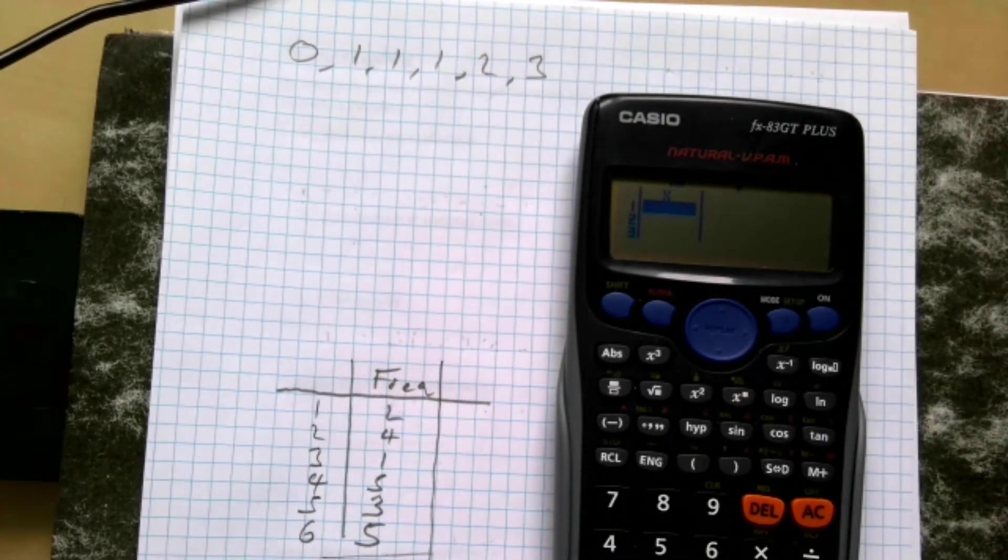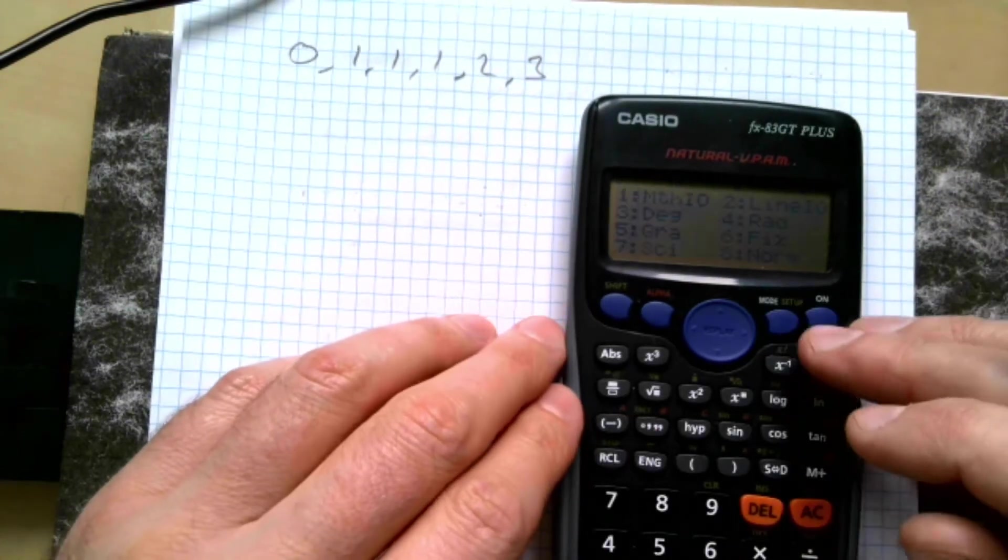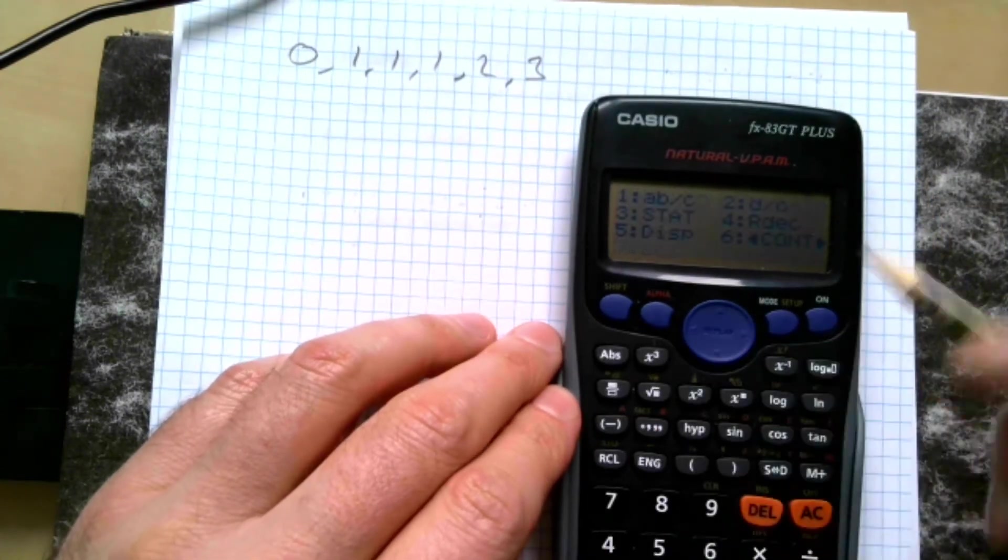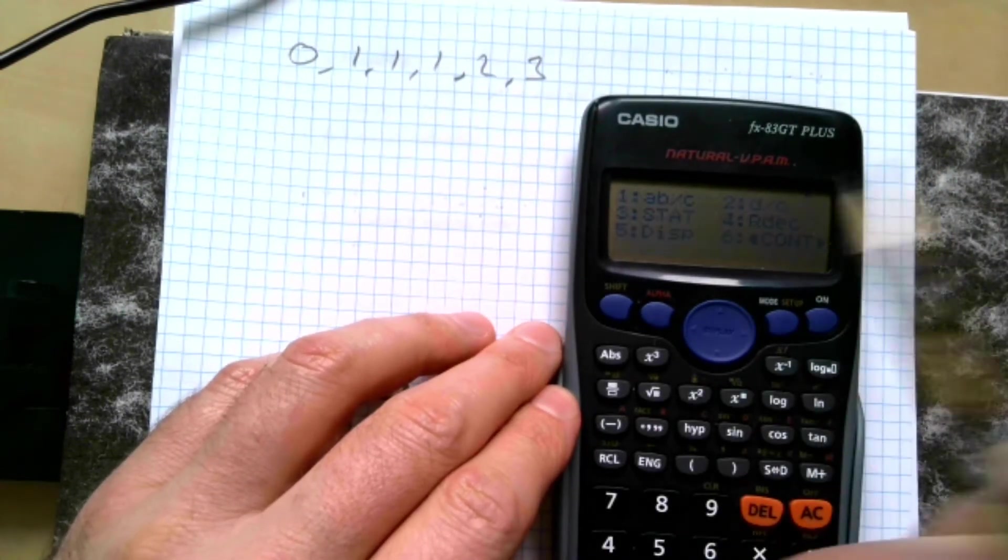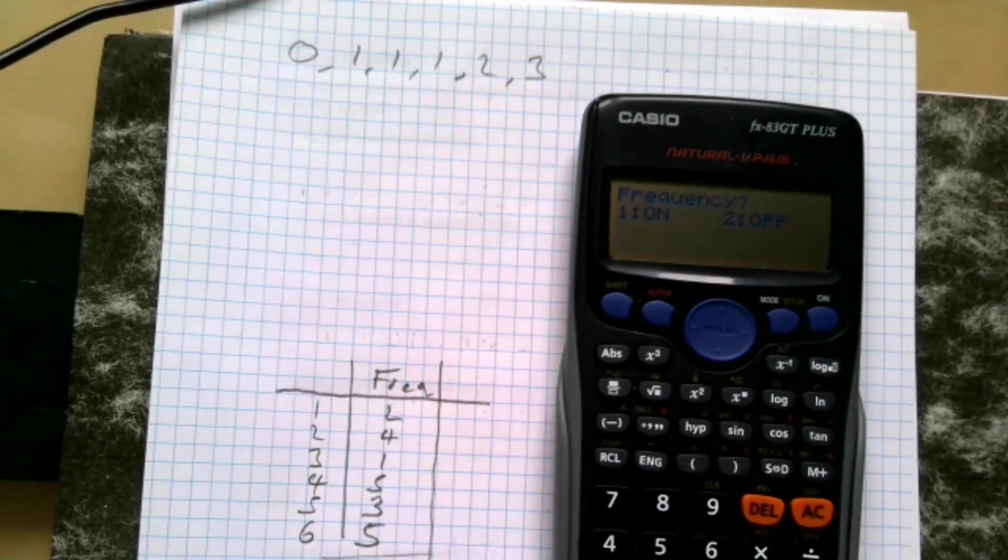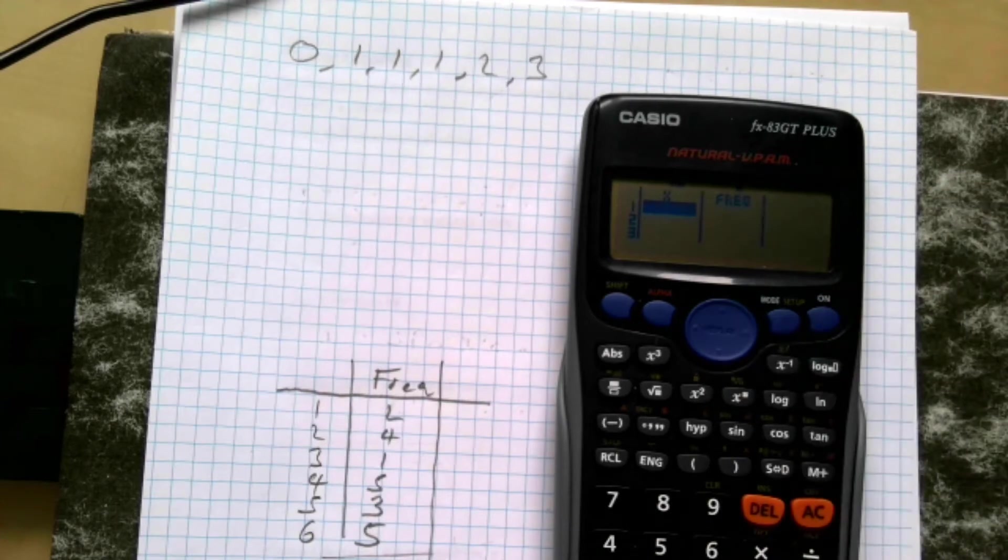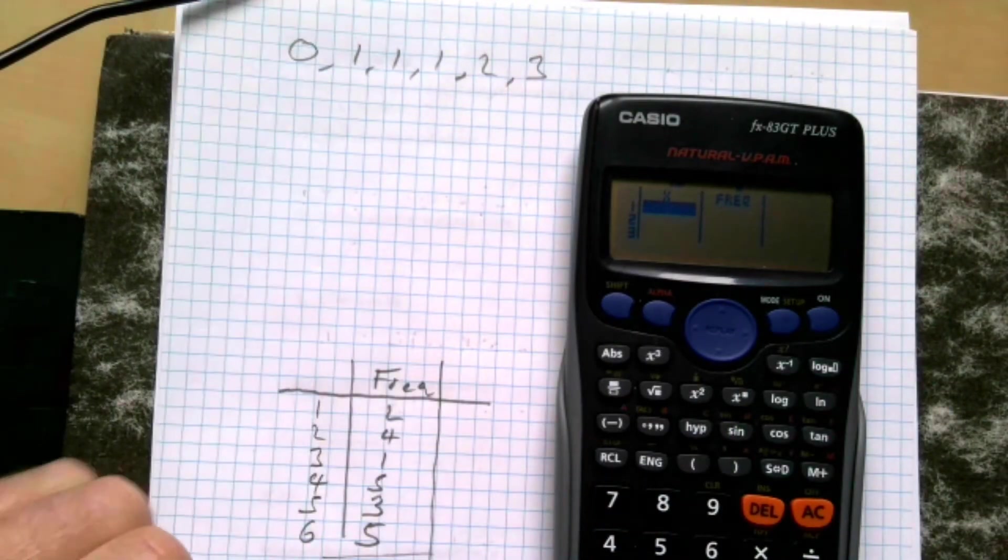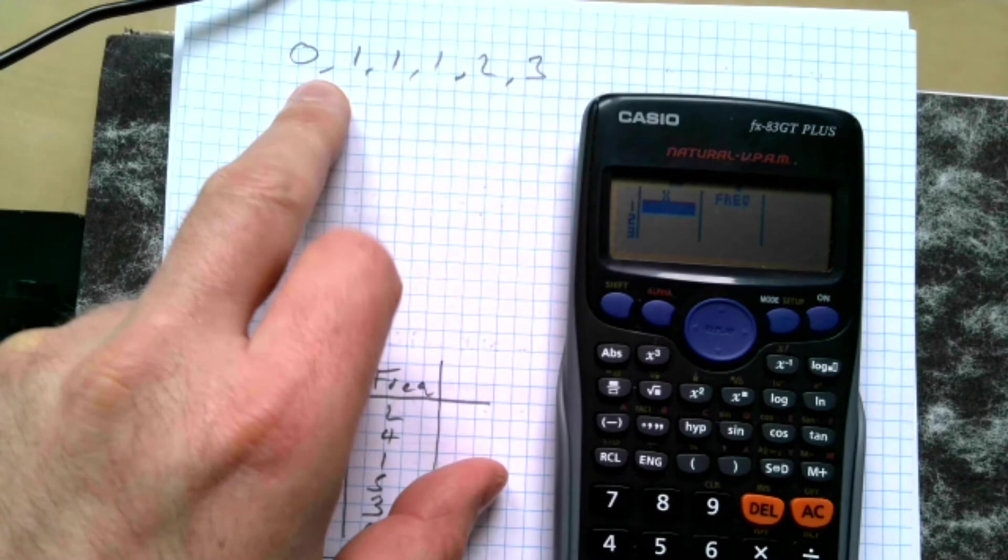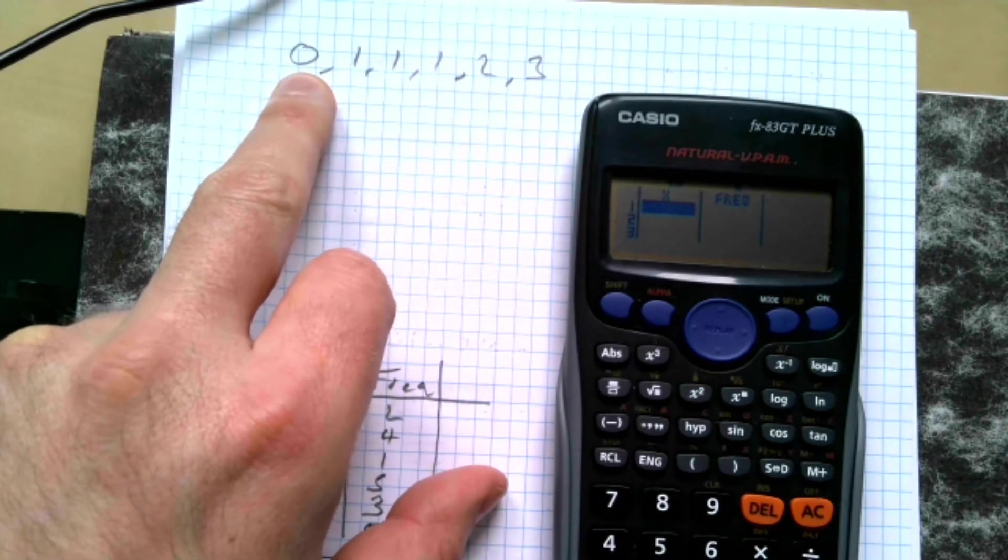So if we then go for shift, setup, and scroll down until we hit stats here, which is number three, that's my frequency on or off. If I turn the frequency table on now, it appears with two columns. I would just keep it like this to be honest and just work from this from now on.